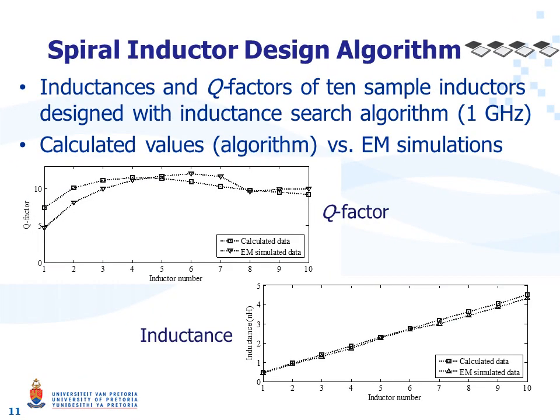The two figures in this slide show the inductances and quality factors of 10 sample inductors designed with the inductance search algorithm at a frequency of 1 GHz. The figures show the values calculated by the inductance search algorithm versus the values obtained by electromagnetic simulations. In the case of quality factors, good correspondence can be seen between calculated and simulated data. Even better correspondence can be seen when comparing the calculated and simulated data for the inductance.